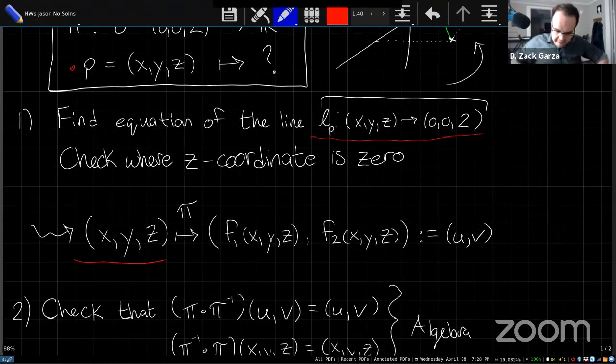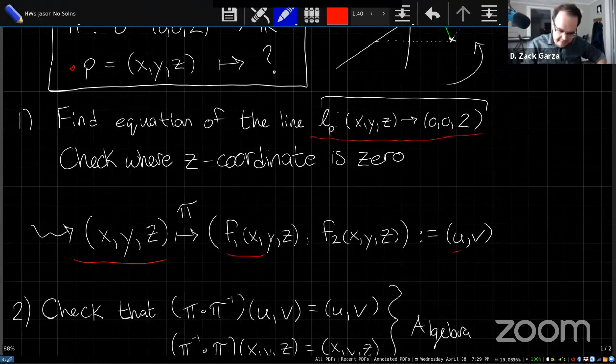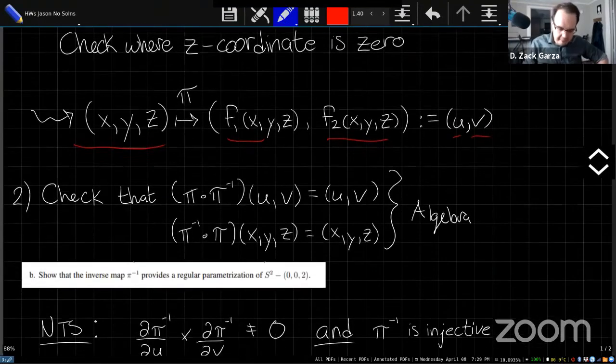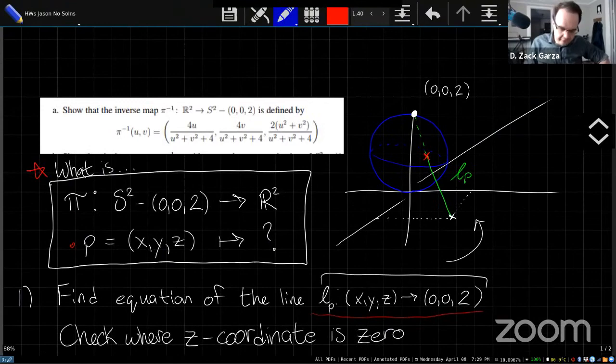And so that should give you this map pi. Because the third component we know is going to be zero for any of these. So we can see what the first two components of that function look like, and that will be our pi. And we'll just define the first component to be our u, and the second component to be our v. So once we have pi, we can actually check what the question is asking, namely if this is the inverse map.